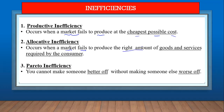Number three is Pareto inefficiency. Pareto inefficiency simply states that you cannot make someone better off without making someone else worse off. Basically, you cannot please everyone in the market.